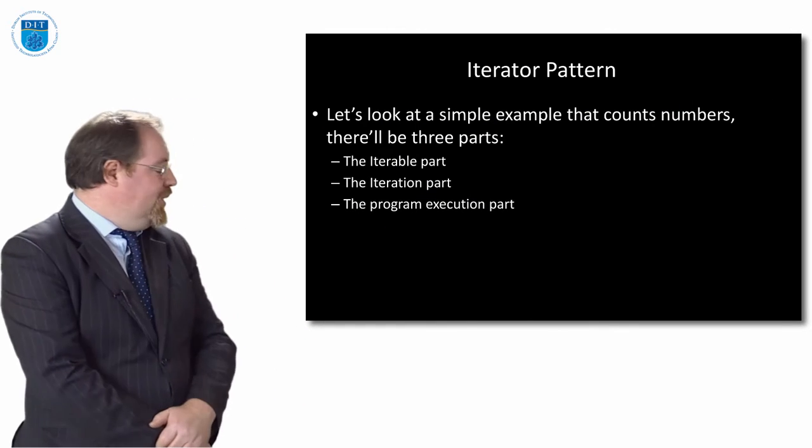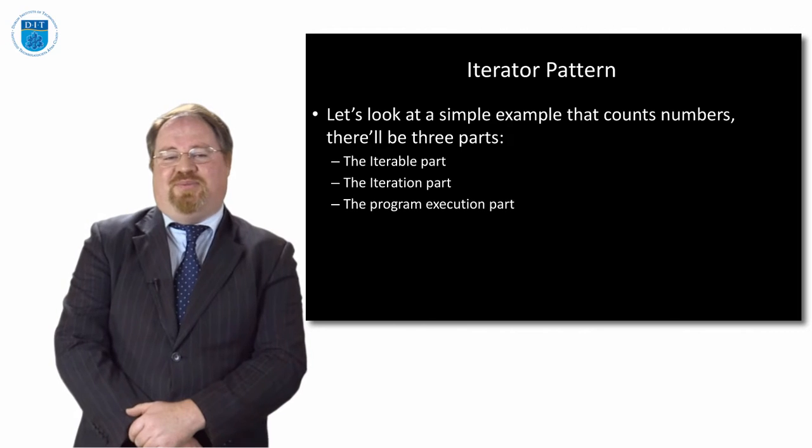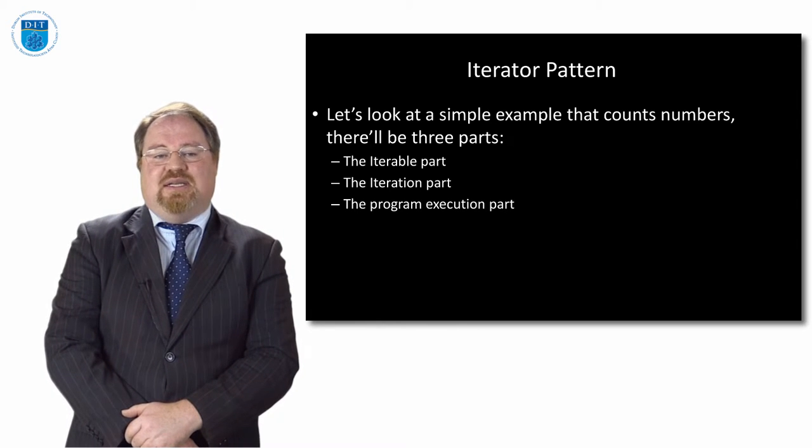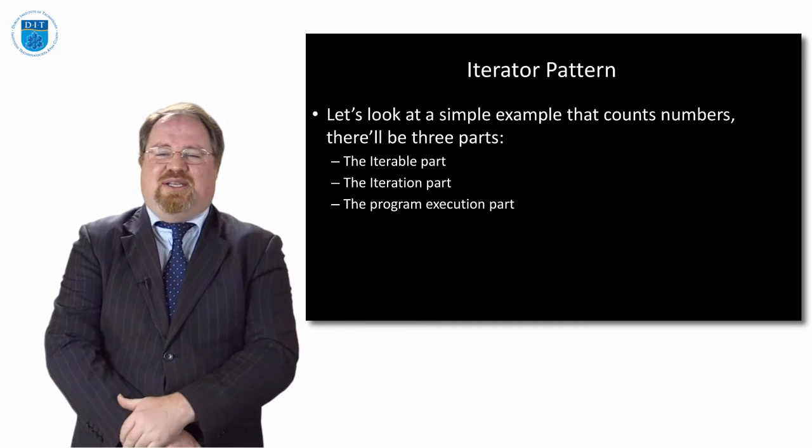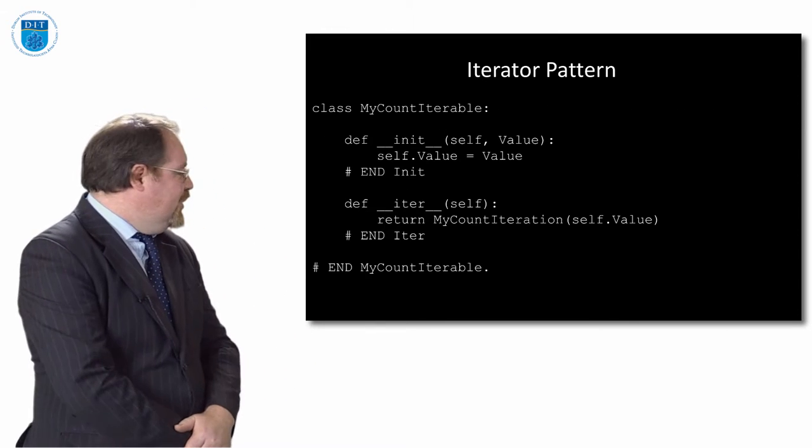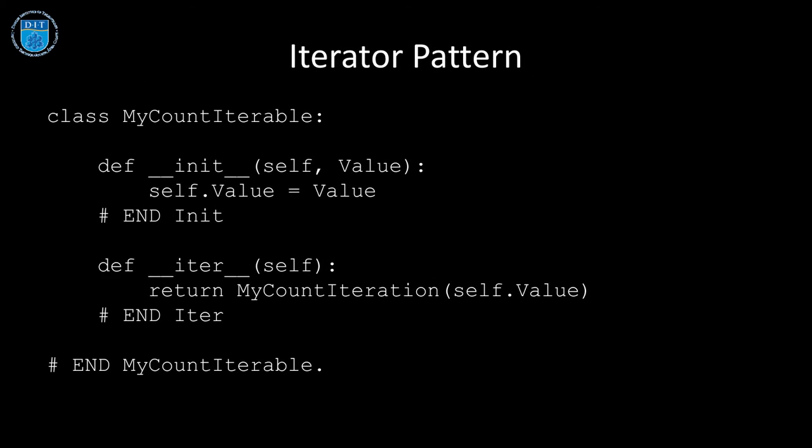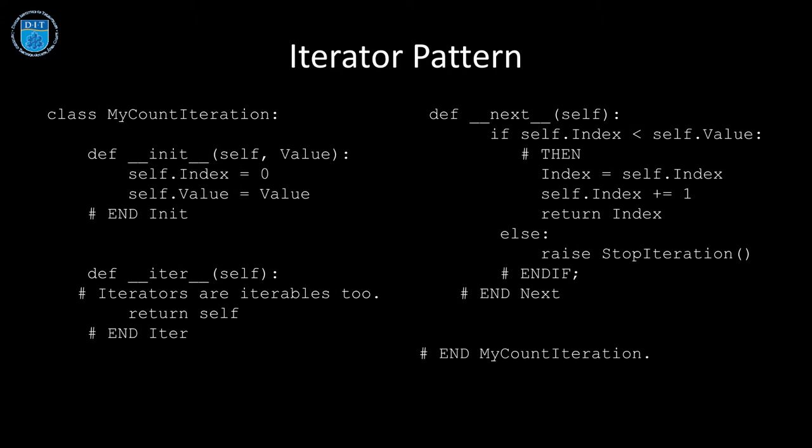Now let's look at an example. This example counts numbers and there's three parts to it: the iterable part, the iteration part, and a bit of code we need to run to make it execute. The iterable part is exactly the same as the template. We take in a value, we set self.value to value, we take in an iteration. This program is called MyCountIterable, so we return MyCountIteration.